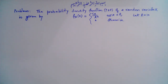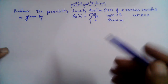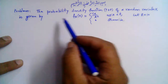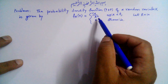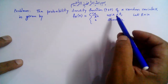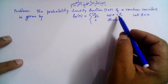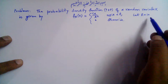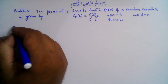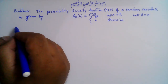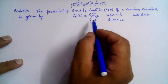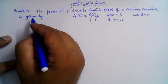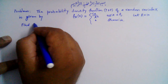The probability density function (PDF) of a random variable X is given by f(x) = cx over r squared, where x is greater than or equal to 0 and less than r, and 0 otherwise. Given that r equals 10, we need to find the constant c.